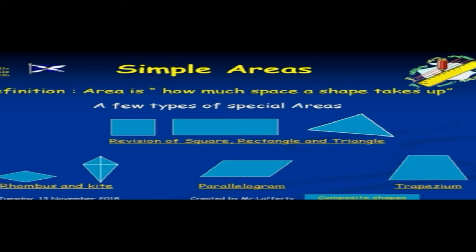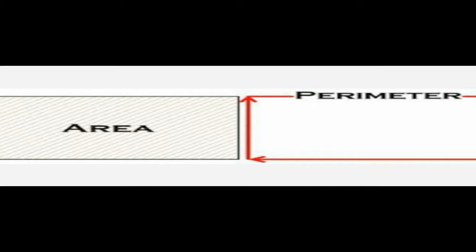Area is how much space a shape takes up. Now, after listening to this definition, you will have confusion between the perimeter and the area. So I am going to describe the difference between area and perimeter. According to these definitions displaying on your screen, there is a huge difference between area and perimeter.